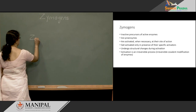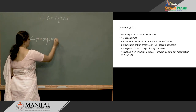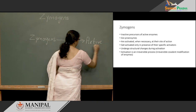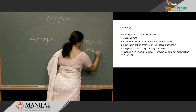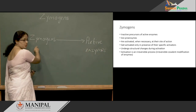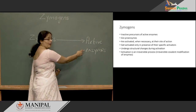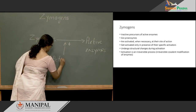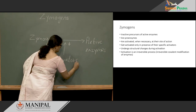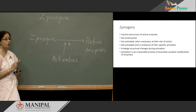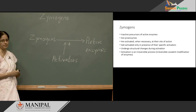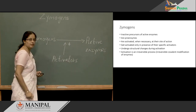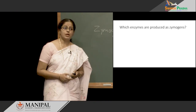We have Zymogens which are inactive enzymes and they are converted to active enzymes at the site of action in the presence of activators. This activation happens only at specific sites, only when there is a requirement of the active enzyme, and this activation process is irreversible. Next, let us see which enzymes are produced as Zymogens.